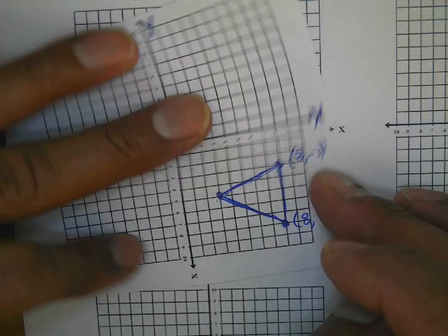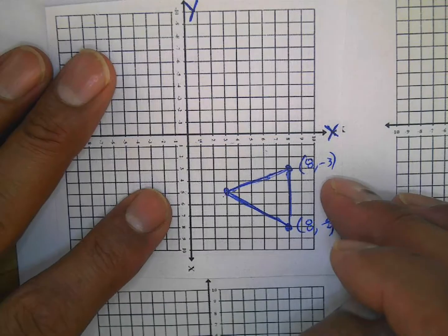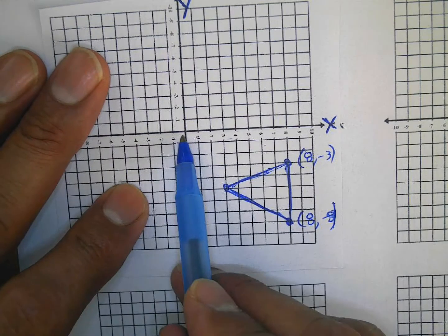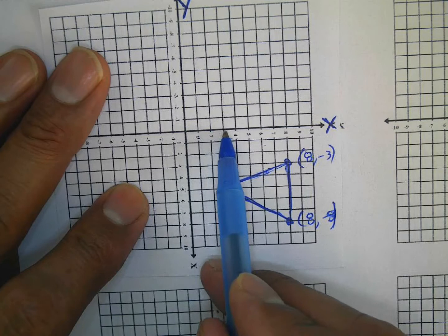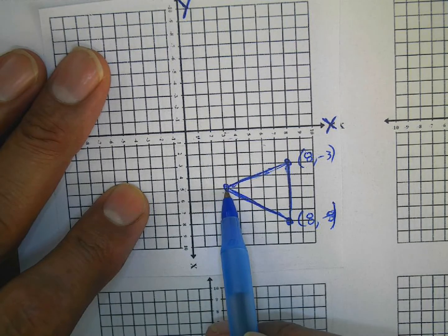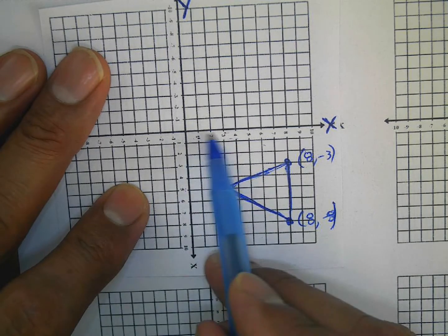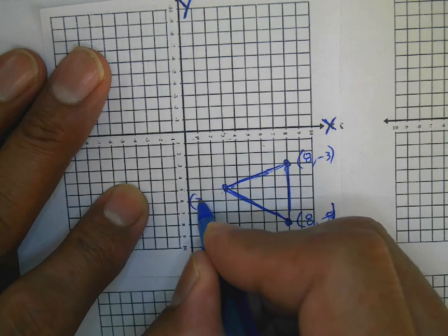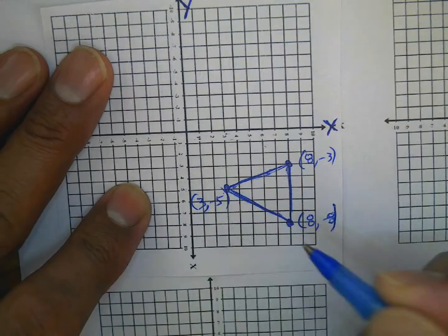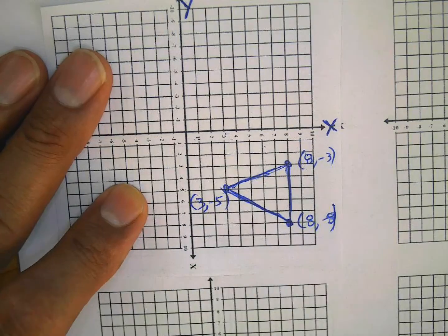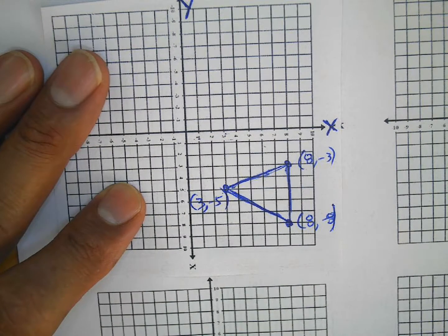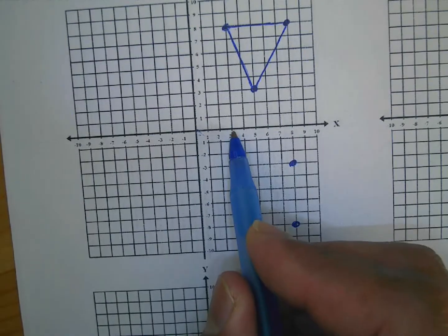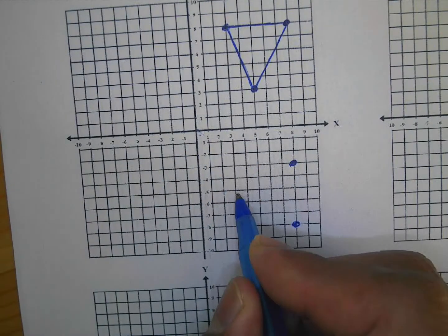Then I rotated it and now this point would be at one, two, three and down five — so that's (3, -5). I go over here and put that one at (3, -5).